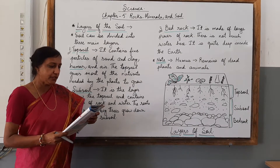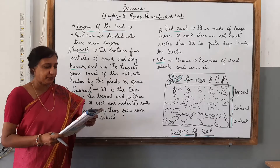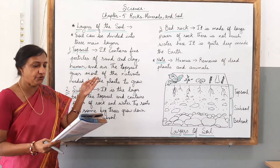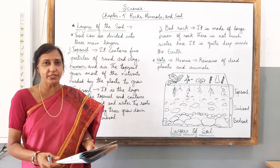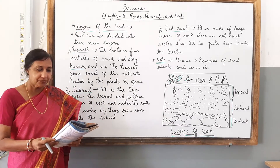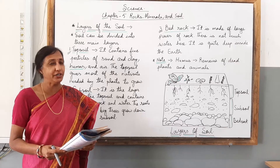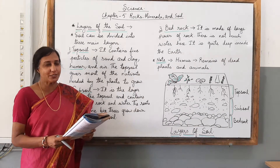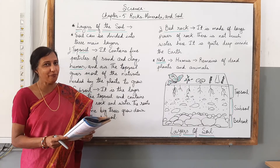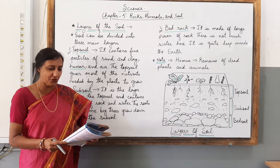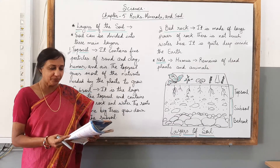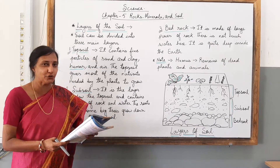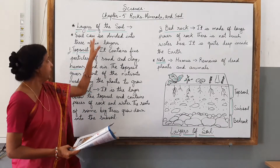Humus - the remains of dead plants and animals - and water. Besides these, soil also contains air, minerals and some microorganisms. Gravel means small stones, and a microorganism is a very small living thing that can only be seen under a microscope.